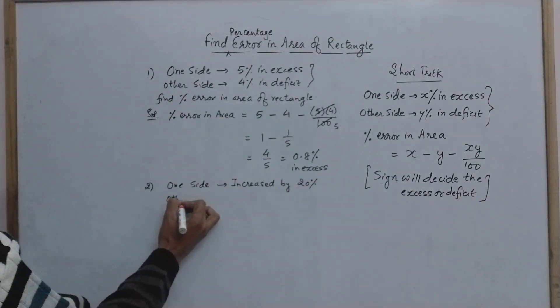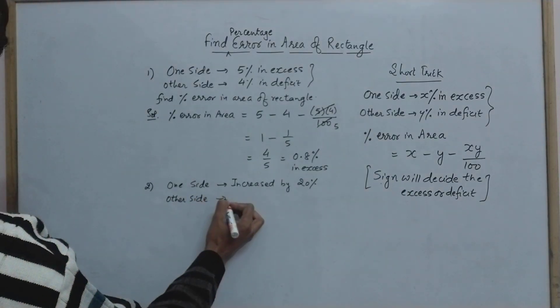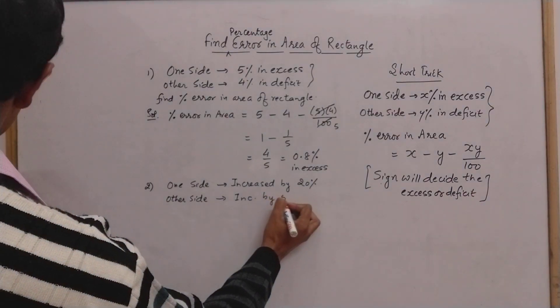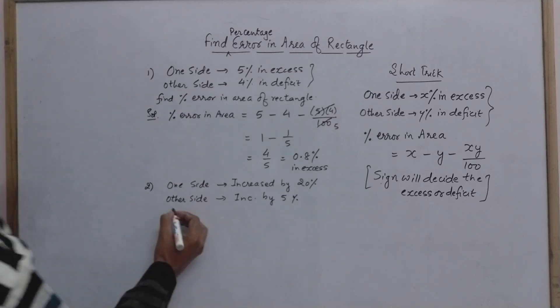What about the other side? The other side is also increased by 5 percent. Both the sides are increased by a particular percentage, and now we need to find the percentage change in area.